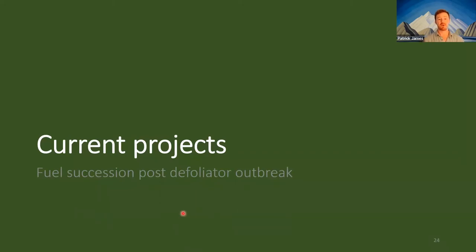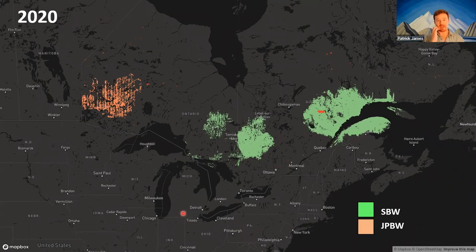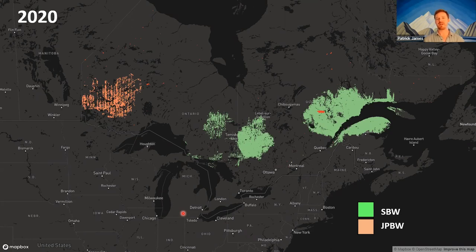I'd like to talk about another ongoing project related to fuel succession post-defoliator. In eastern Canada there's quite a bit of activity: the green here shows the spatial extent of the spruce budworm outbreak in Quebec and Ontario, and the orange the spatial extent of the jack pine budworm outbreak in 2020. The jack pine budworm outbreak seems to have collapsed since, and the 2021 data isn't reliable because the survey view was occluded by smoke from last year's fire season. The spruce budworm outbreak is also beginning to collapse, contracting somewhat.